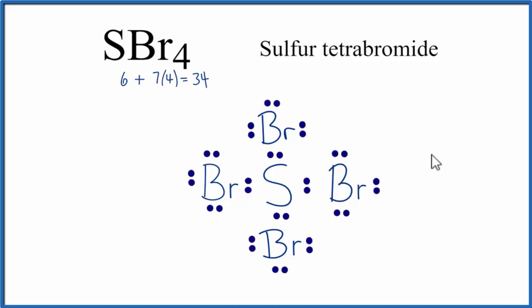So at this point, we've completed the octets for all of the atoms. The bromines, they have 8 in that central sulfur. It has 8 as well. The only problem is we've used just 32 valence electrons, and we have 34. So we need to figure out a place for those remaining 2 valence electrons.